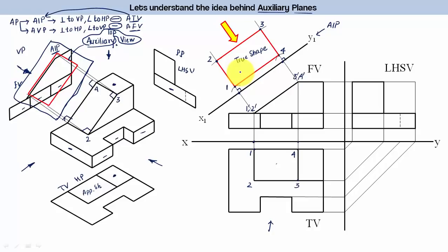This method will be extremely important going forward. In upcoming lectures, I'll be showing you how to find the true length of any given line, how to draw the projection of a plane when its surface is inclined and one of its edges is also inclined, and how to find the projection of a solid whose axis is inclined — all using the auxiliary plane method. So this entire week it's going to be all about auxiliary planes. If you have any doubts, write them in the comment section below. Share, like, and subscribe, and press the bell icon for notifications. Bye bye and take care!